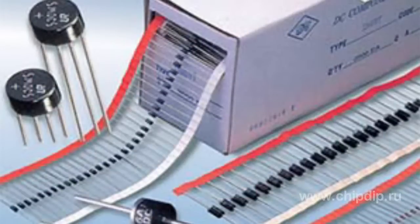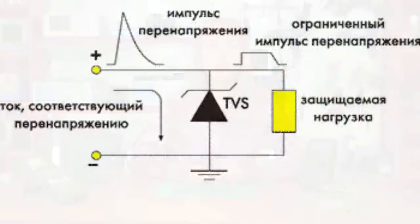Various electrical overloads may occur in circuits during the operation of electric equipment under actual operating conditions. The most dangerous overload is voltage overload. TVS diodes are used to protect equipment circuits from electrical overloads. TVS diodes are semiconductor devices similar to semiconductor voltage regulator diodes.